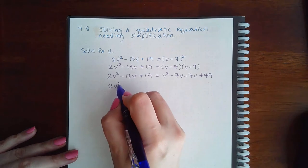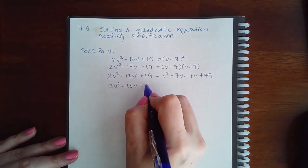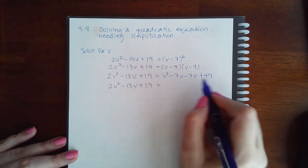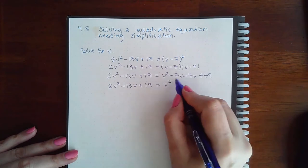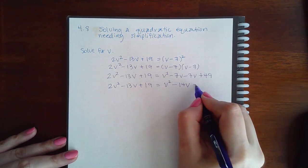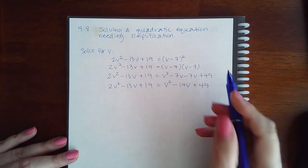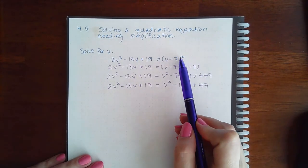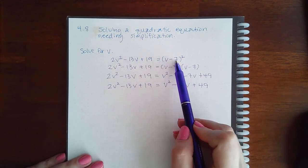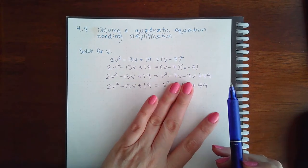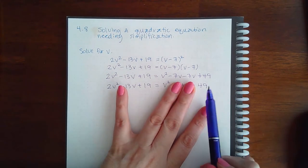The common mistake on this problem is going to be multiplying this out incorrectly. Because notice these are both negative, so I get -14v + 49. I don't know how many times I have people that will square the v and square the 7 and only get v² and then somehow get -49.